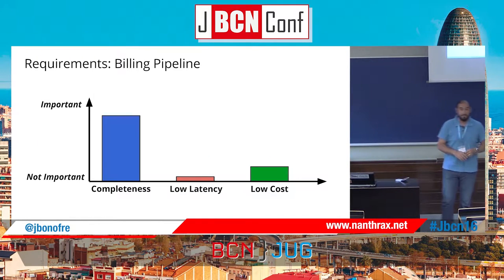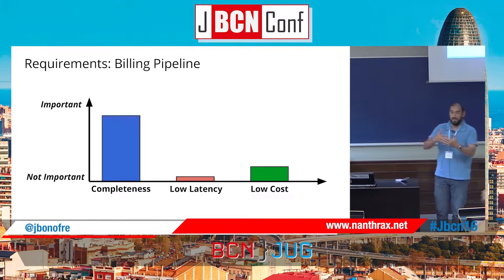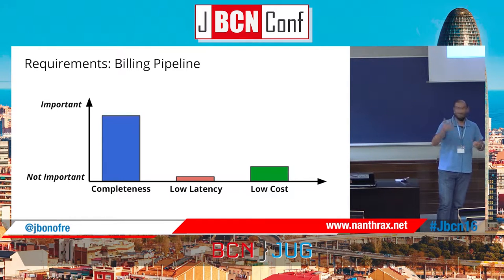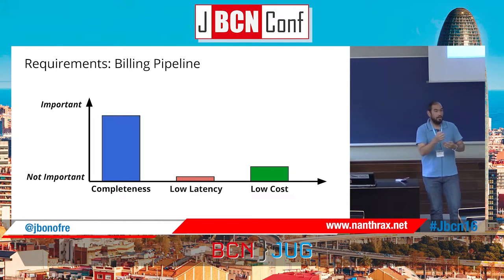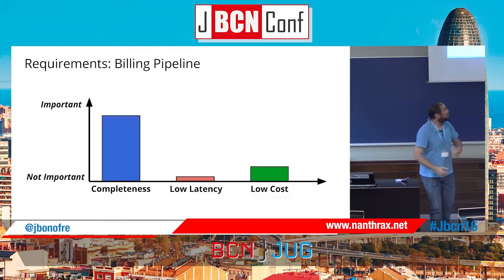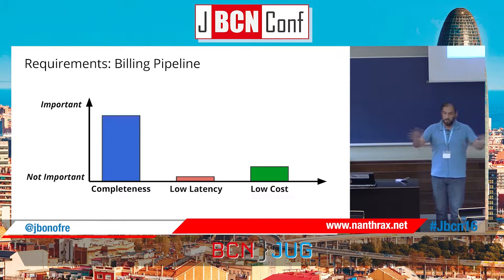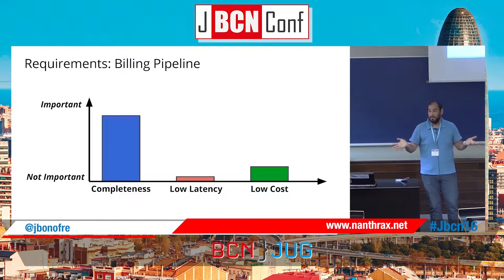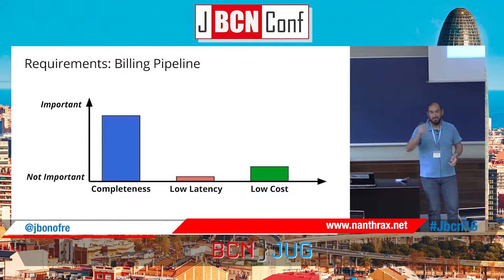Let's take some examples. You want to implement a billing pipeline. On a mobile application with ads, every month you send a bill to the advertiser for all advertising they had in your app. The most important part is completeness — you need all the data for that month. Low latency doesn't really matter; you can run this batch every month. The most important thing is to get all the data. Low cost is also relevant, but even if this pipeline is slow, it doesn't really matter.